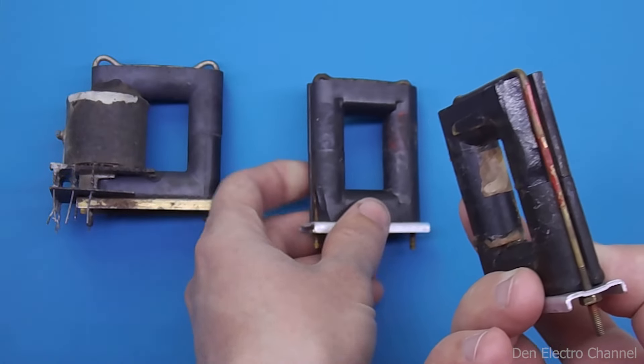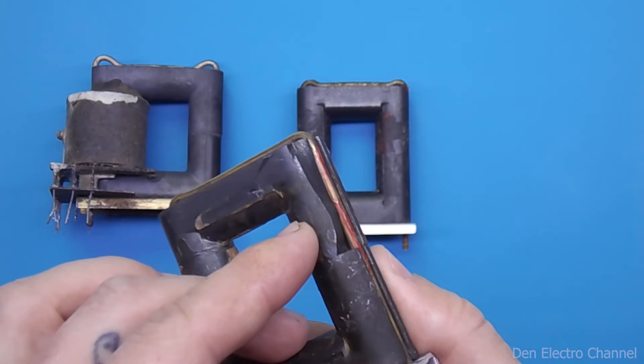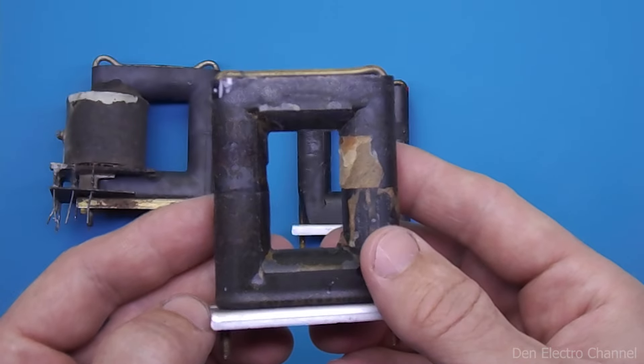Sometimes the transformers installed in TVs are slightly damaged. This reduces the cross section of the magnetic circuit slightly, but this did not affect the quality of the picture on the TV.